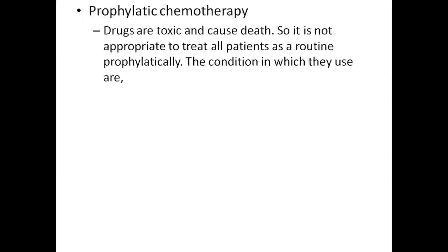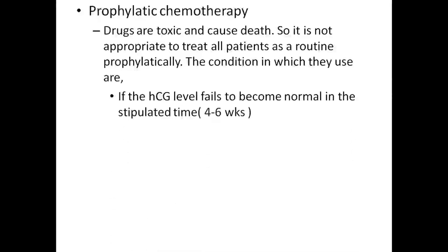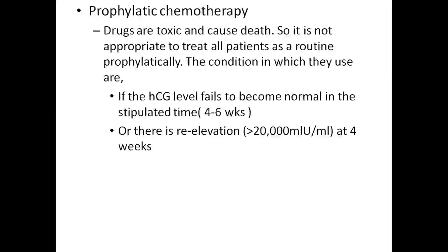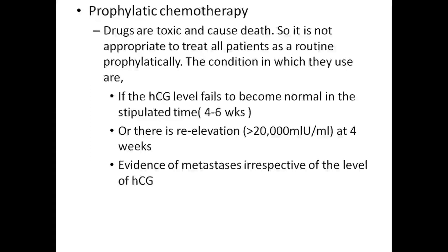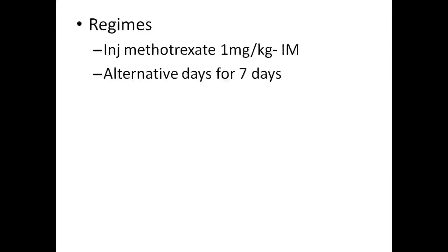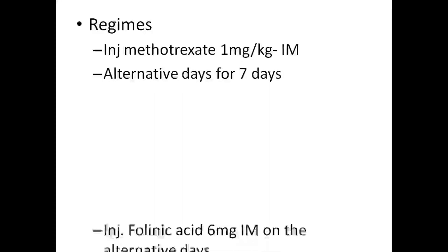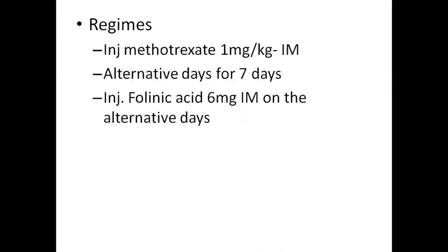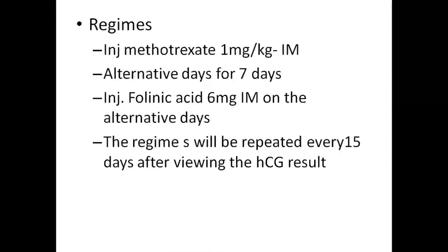Prophylactic chemotherapy: drugs are toxic so it is not appropriate to treat all patients routinely and prophylactically. The conditions in which they are used include: HCG level fails to become normal within the stipulated time of 4 to 6 weeks, or there is re-elevation within 4 weeks; evidence of metastasis irrespective of HCG level; where malignant sequel is higher judged by risk factors; and where follow-up facilities are not available. Regimen A: methotrexate 1 mg/kg IM on alternative days for 7 days with folinic acid 6 mg IM on alternate days. Regimens are repeated every 15 days after reviewing the HCG results.